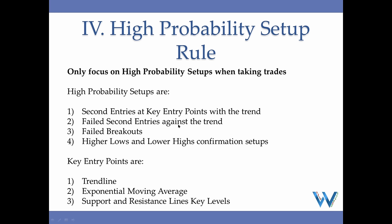Price reflects human behavior. The high priority setup rule tells us when to enter and puts the odds on our side for higher likelihood of succeeding. A high priority setup is a second entry at a key entry point with the direction of the trend, or a failed second entry that goes against the current trend — failed breakouts, higher lows, lower highs, or confirmation setups. These setups don't mean anything on their own; we need to combine them with a key entry point. A key entry point is a trend line, support or resistance line, or the 21-bar exponential moving average.